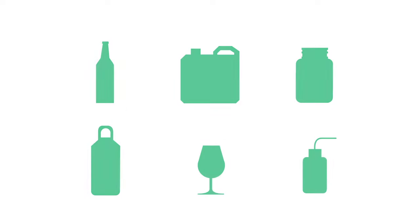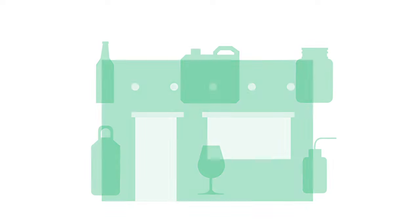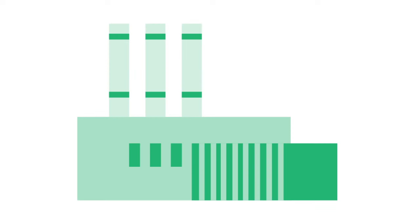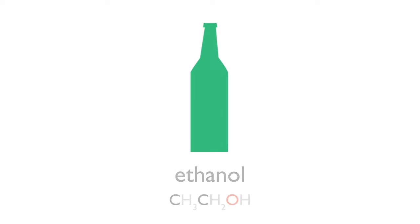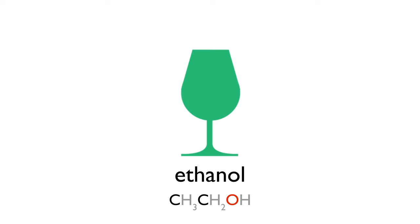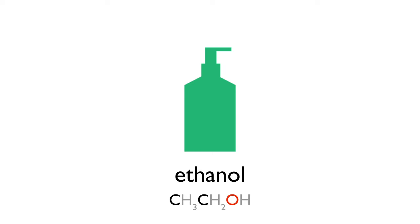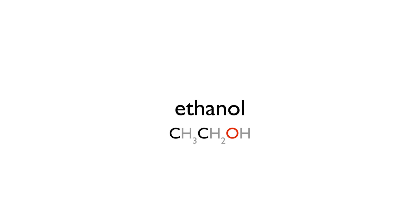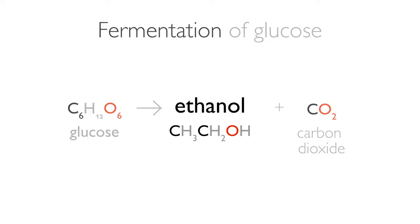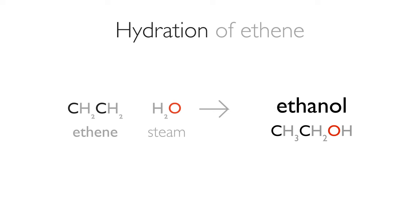Different alcohols have different uses at home and in industry. Ethanol is of course a common alcohol used in beverages, but it is also an important antiseptic. Ethanol can be made by two main methods: by fermentation and by the hydration of ethene.